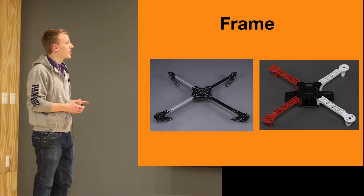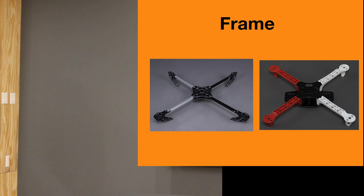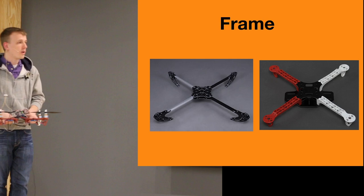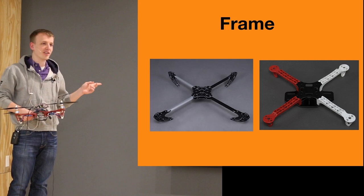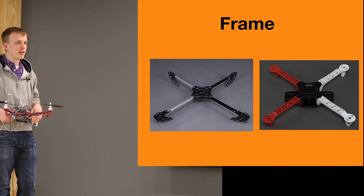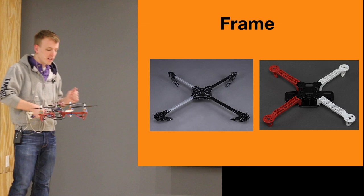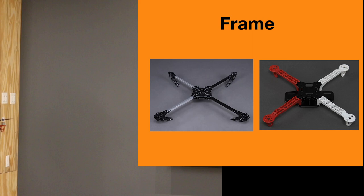Into the components — starting with the frame. I started out with a frame more like the one on the left. While it looks pretty cool, any time I crashed, one of those little screws or pieces broke. So I moved to a simpler frame like the one on the right, which has far fewer parts. For testing purposes that's far superior because there are no little pieces that are going to break. The worst that can happen is you break one of the entire arms, but that's why you just buy two frames in case you break anything.